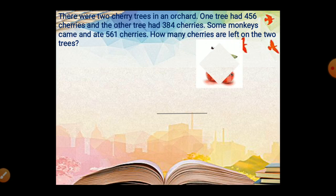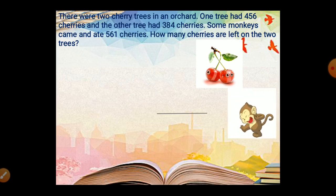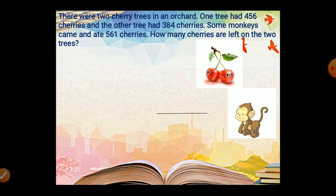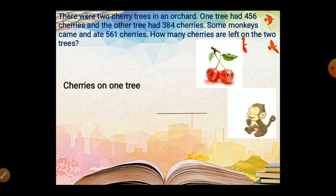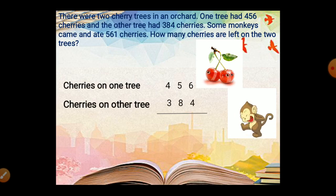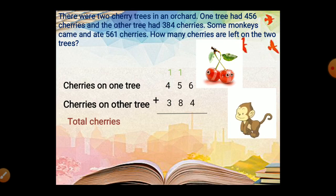There were 2 cherry trees in an orchard. One tree had 456 cherries and the other tree had 384 cherries. Some monkeys came and ate 561 cherries. How many cherries are left on the 2 trees? For total cherries, we do addition: 456 plus 384. 6 plus 4 is 10, carry over 1. 5 plus 8 is 13, plus 1 carry is 14, carry over 1. 4 plus 3 is 7, plus 1 carry is 8. Total: 840.